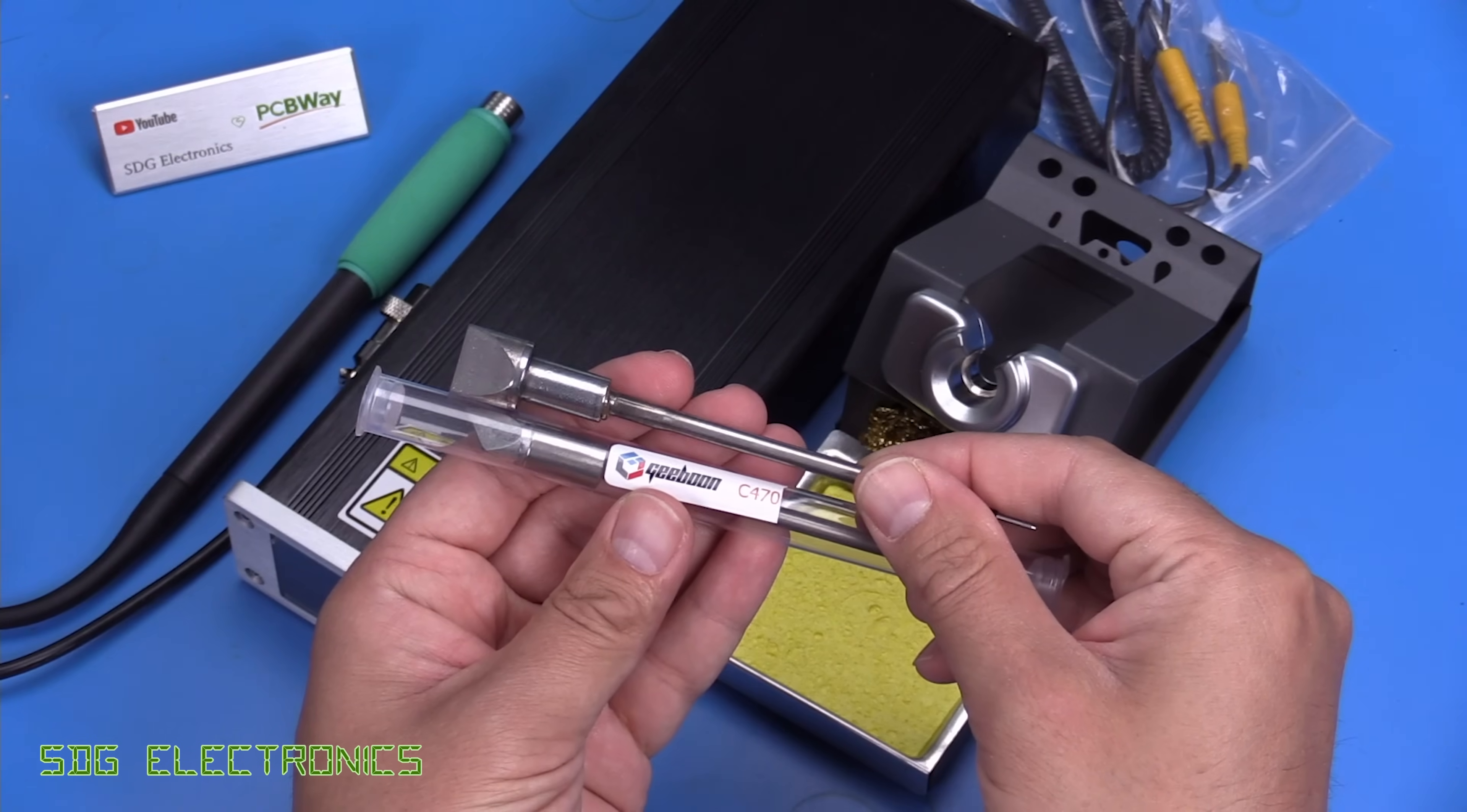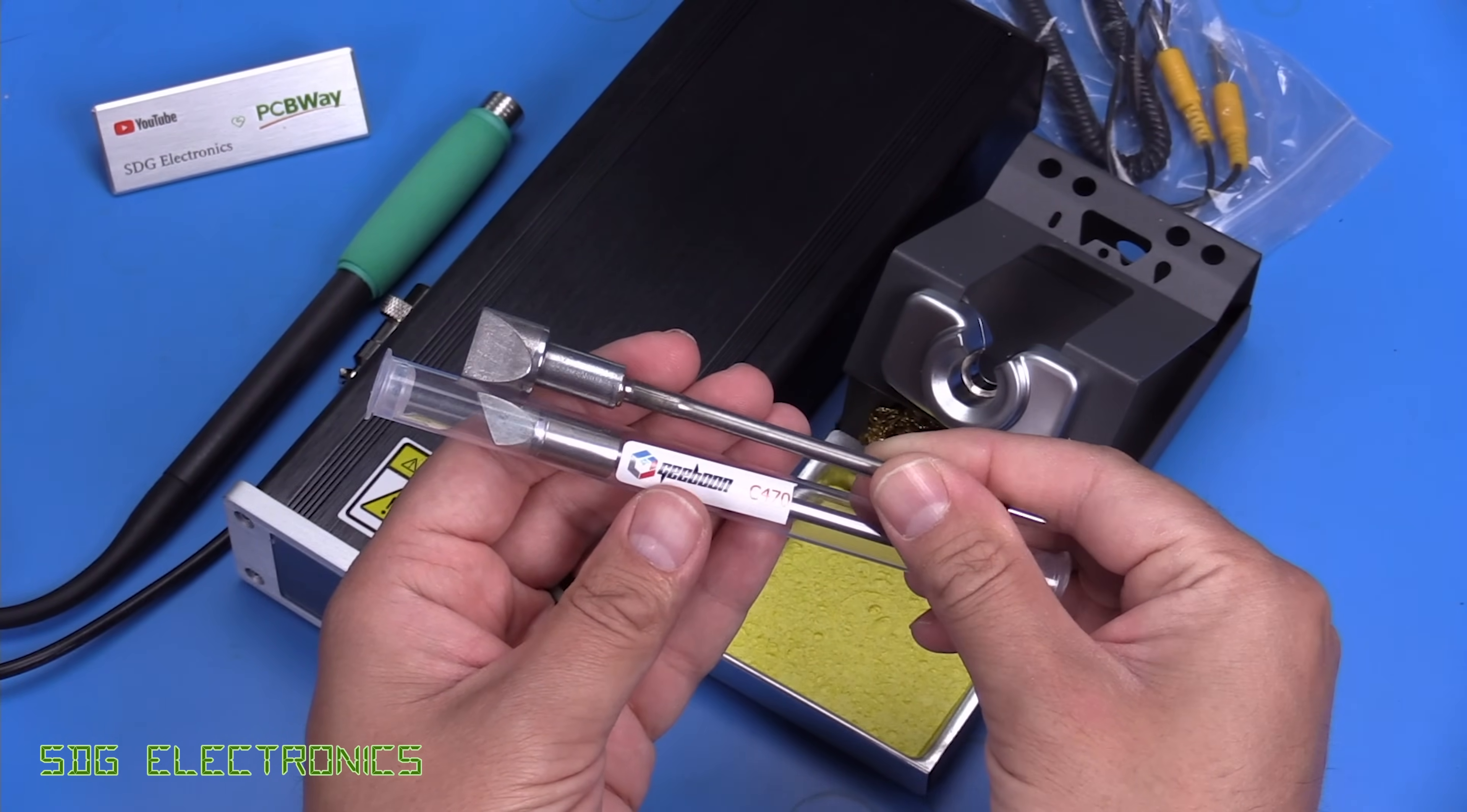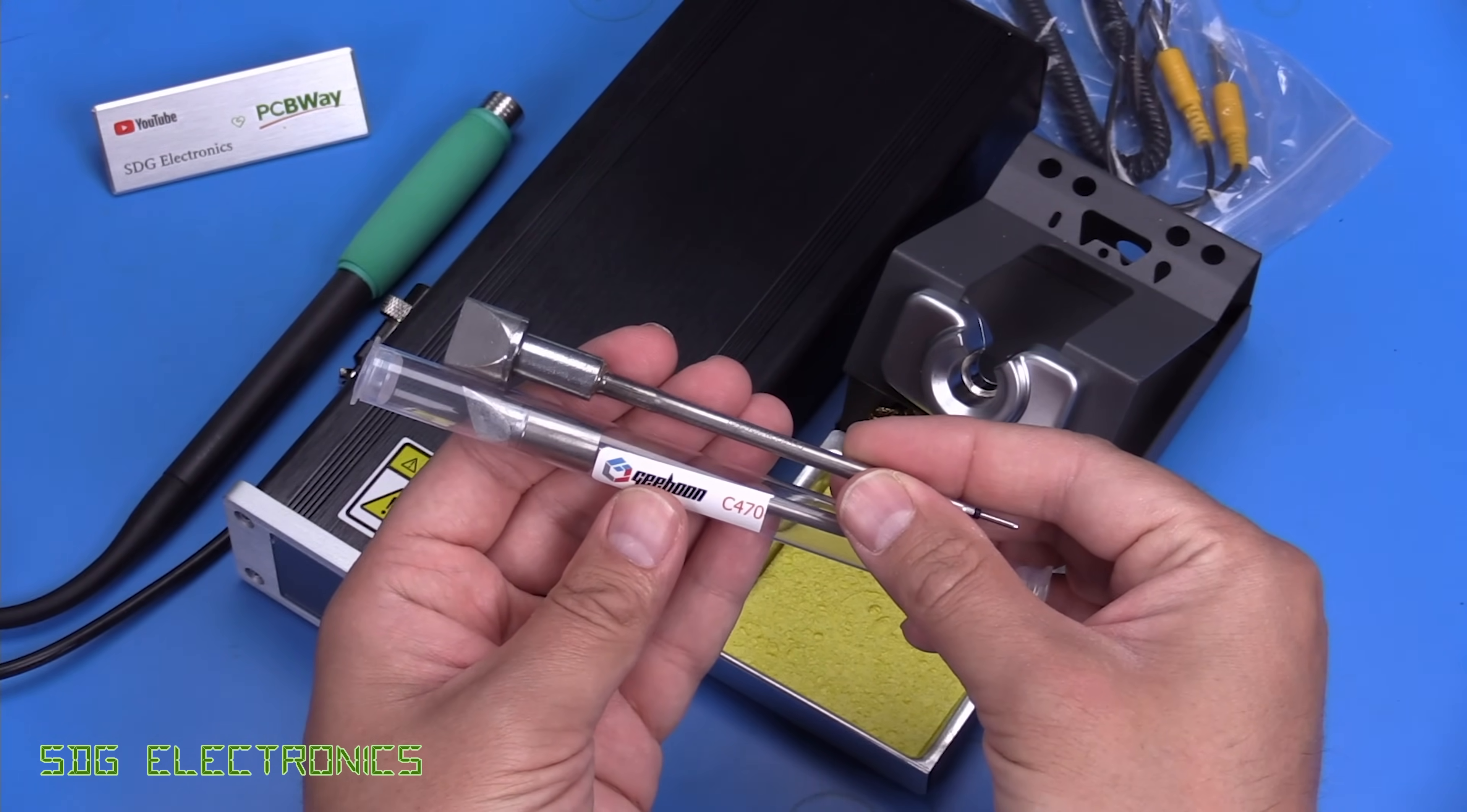And then we also got two cartridges. Now in the listing, it said we'd get a C245 and a C470 cartridge. It looks like we've got two C470 cartridges here.